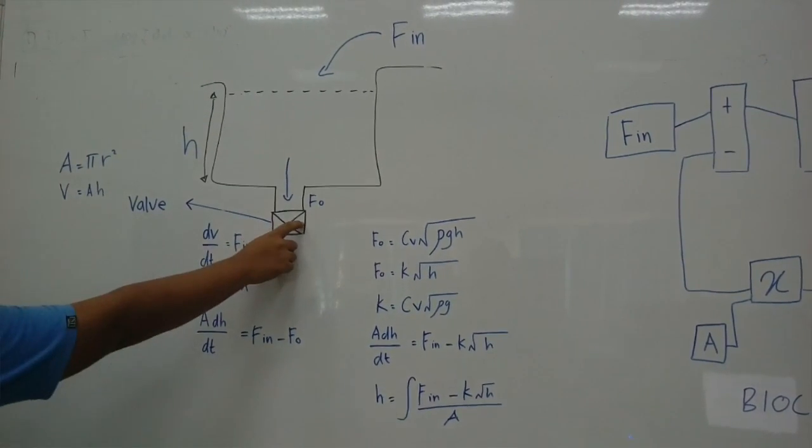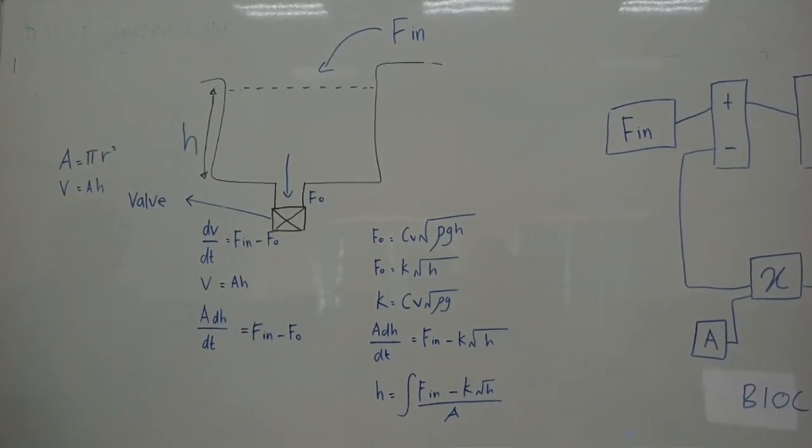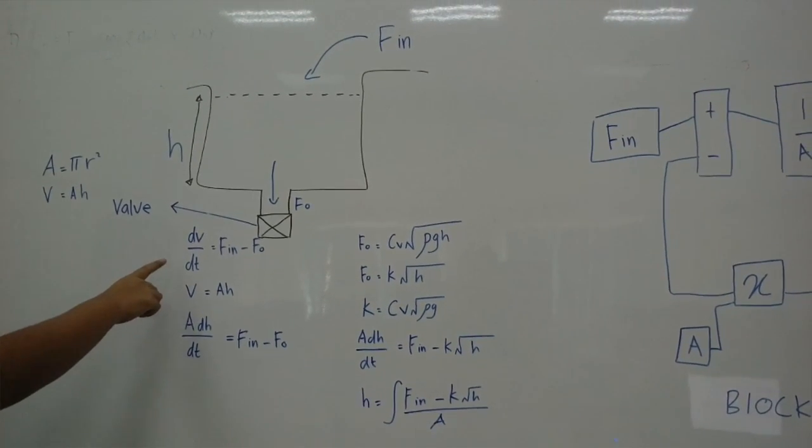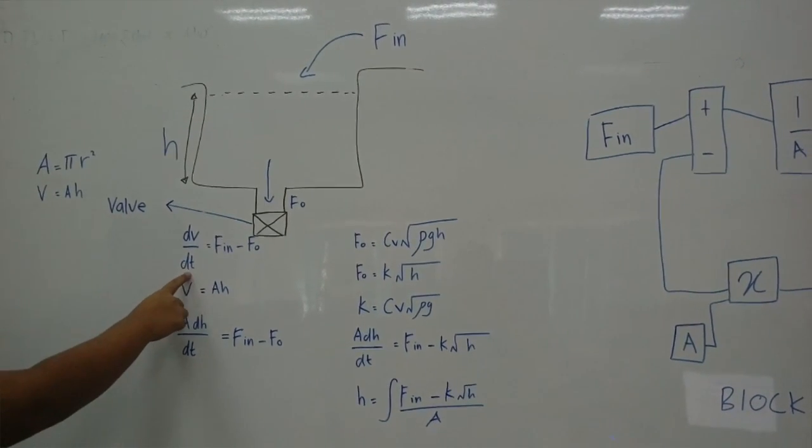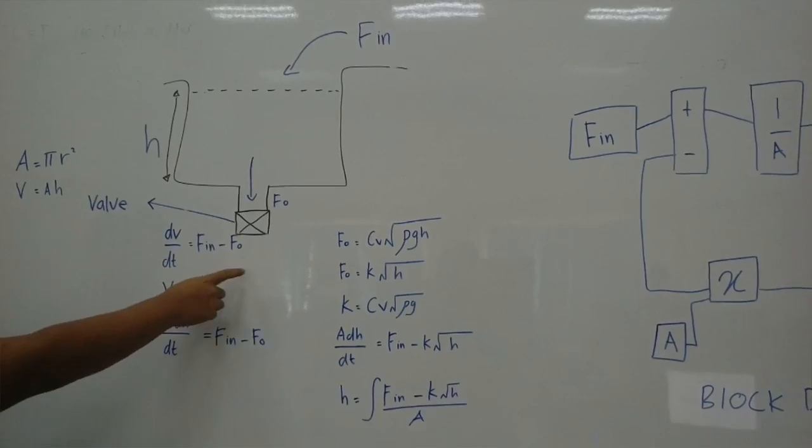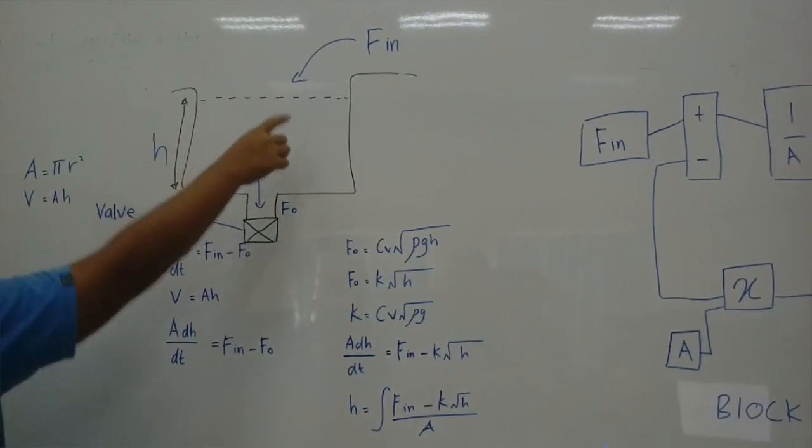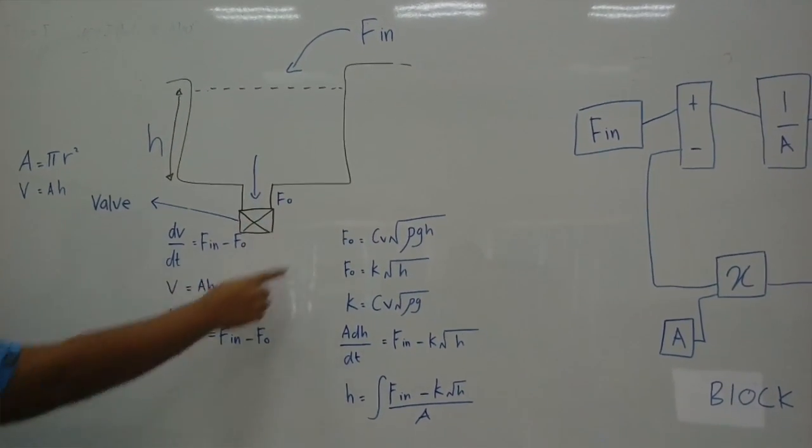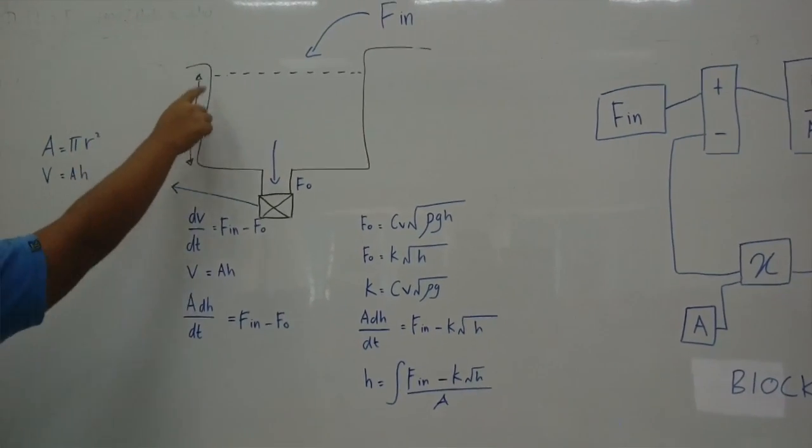This is the valve. The formula for finding water level modeling is dV/dt equal to Fin minus Fo. Fin is the input, Fo is the output. This is the height of the tank.